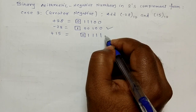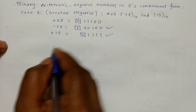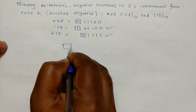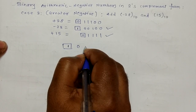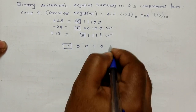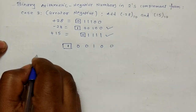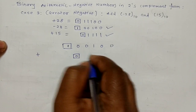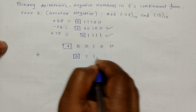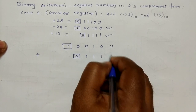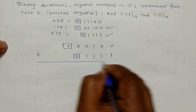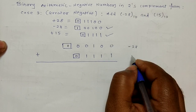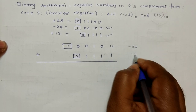So we set up the addition: minus 28 is represented as 1 1 0 0 1 0 0, and plus 15 with its sign bit is 0 1 1 1 1 1. Here minus 28 and plus 15 are being added.